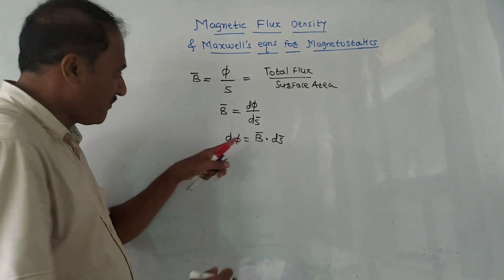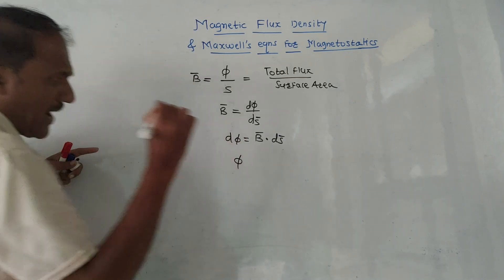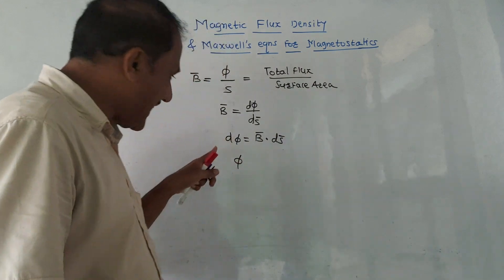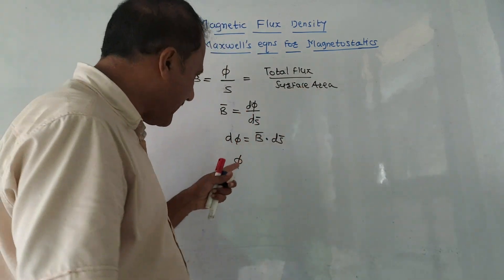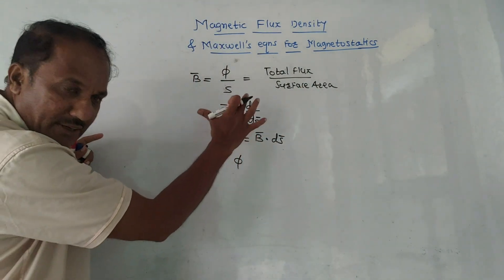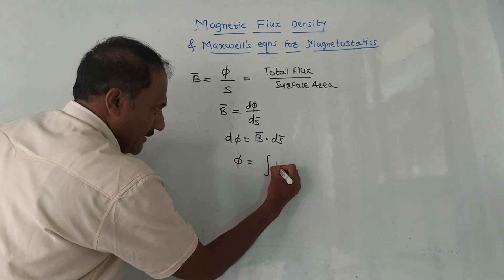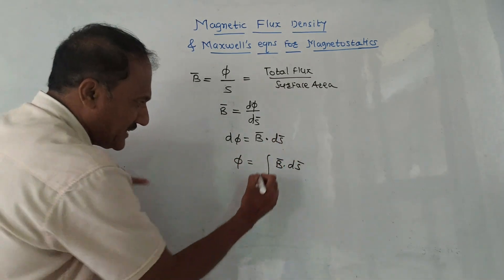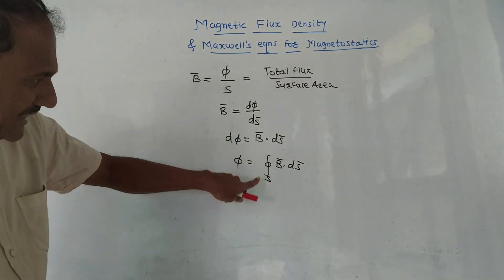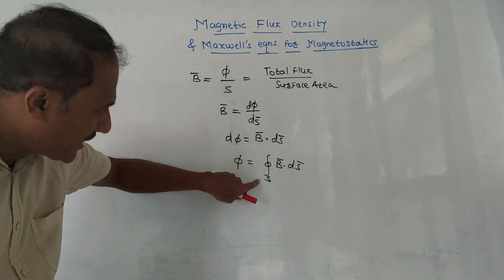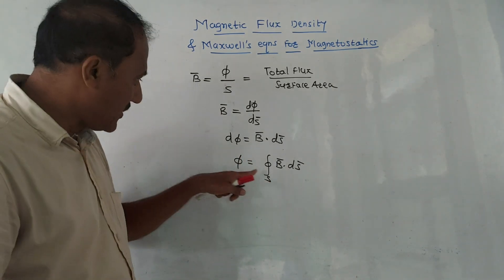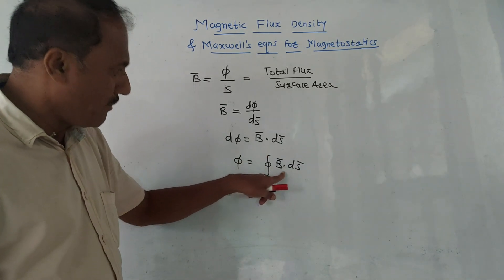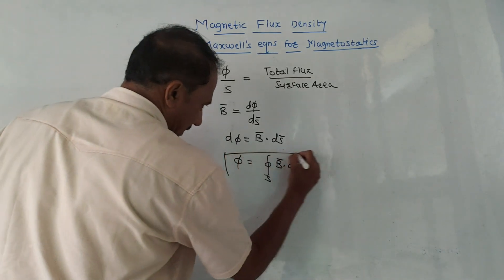From the differential relation, we can write dΦ equals B-bar dot dS-bar. To obtain the total flux Φ, we integrate both sides. Since it is a surface integration, we write Φ equals the closed surface integral of B-bar dot dS-bar. This gives us the equation for total magnetic flux in terms of magnetic flux density B-bar.